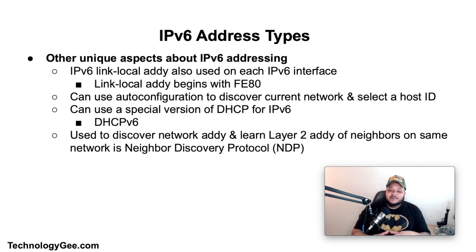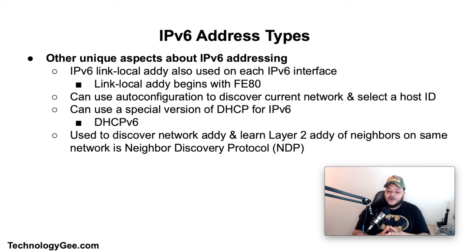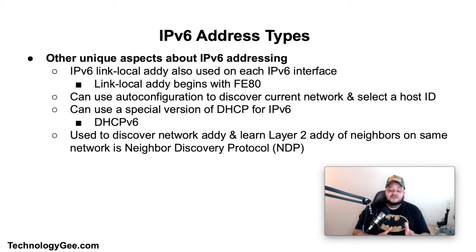Some other unique aspects of IPv6 addressing: every IPv6 interface uses a link-local address beginning with fe80. IPv6 can also use auto-configuration to discover the current network and select a unique host ID — this is made possible through EUI-64, which uses the 48-bit MAC address to generate a unique 64-bit host ID. IPv6 can also use DHCPv6 for address assignment. The protocol used to discover network addresses and learn the Layer 2 addresses of neighbors on the same network is called Neighbor Discovery Protocol (NDP).